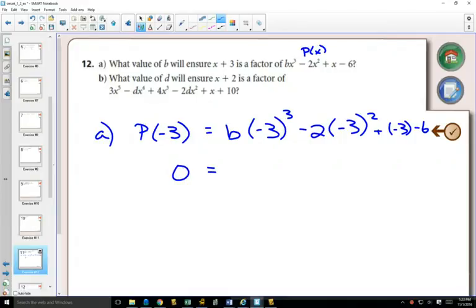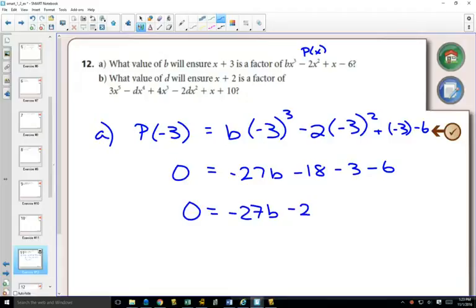And so if I multiply everything out here, we get -27b, this will be -18, minus 3, minus 6. So 0 equals -27b - 27. Therefore 27 equals -27b, and b equals -1. That's using the factor theorem and the remainder theorem and how you would show all of your work to get that.